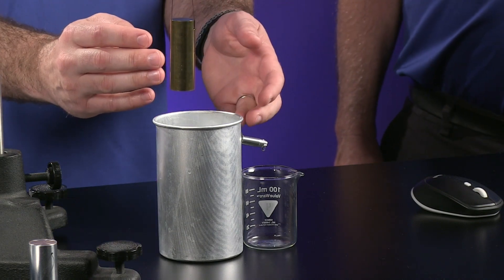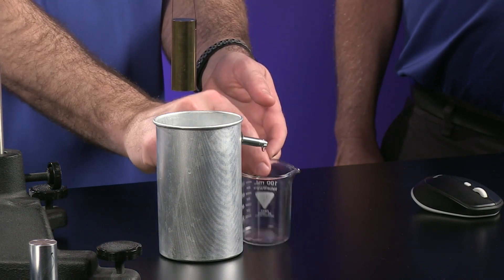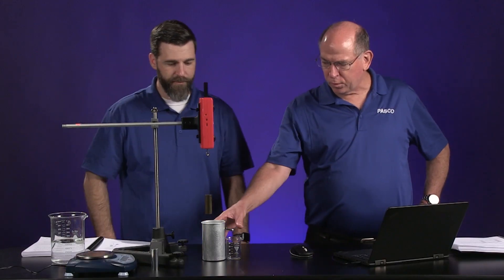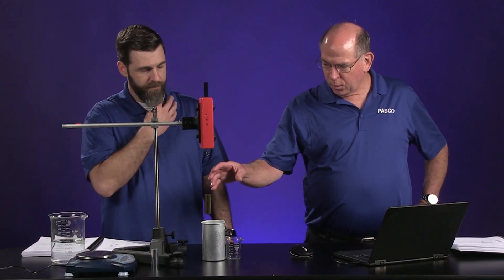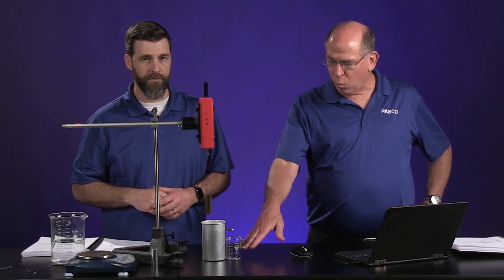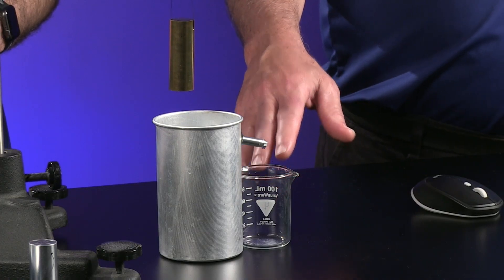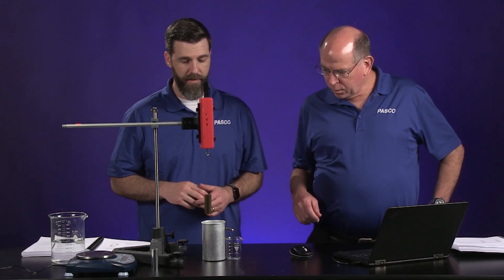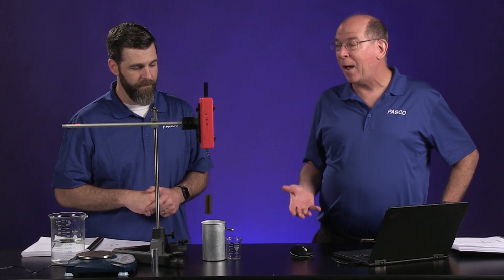We're going to catch it in that beaker, so if we put this whole cylinder in, then the volume of the water that goes into this beaker would equal the volume of the cylinder. That's correct. Now what if we wanted to know the mass of that water?